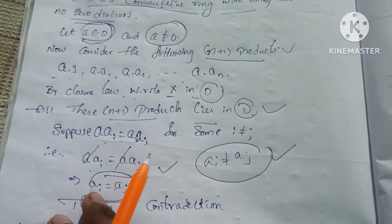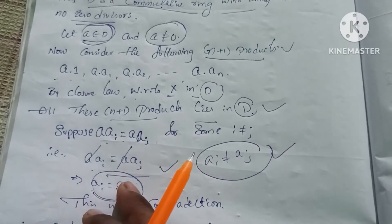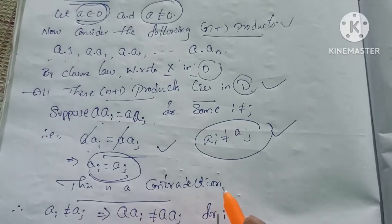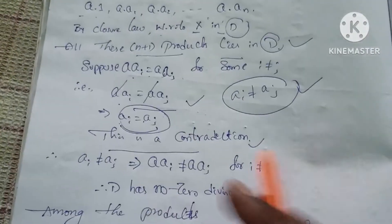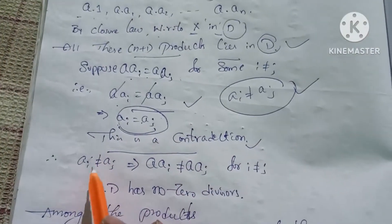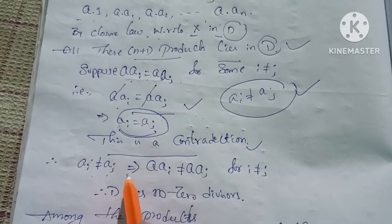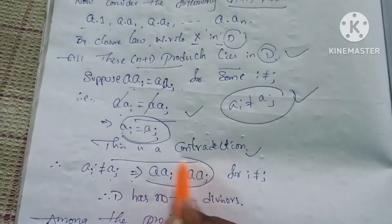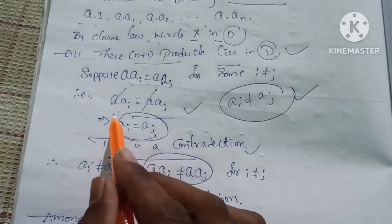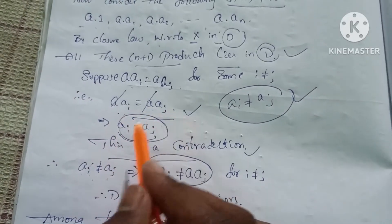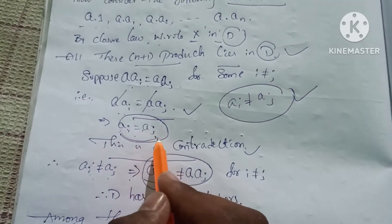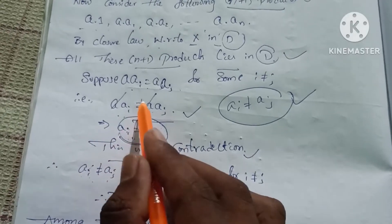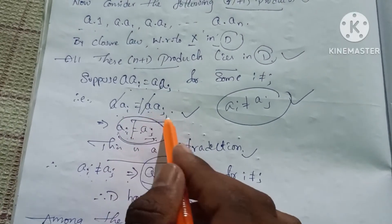When i equals j, we reach a contradiction. Therefore, our assumption was wrong. So if ai is not equal to aj, then a·ai is not equal to a·aj. All n+1 products are distinct.